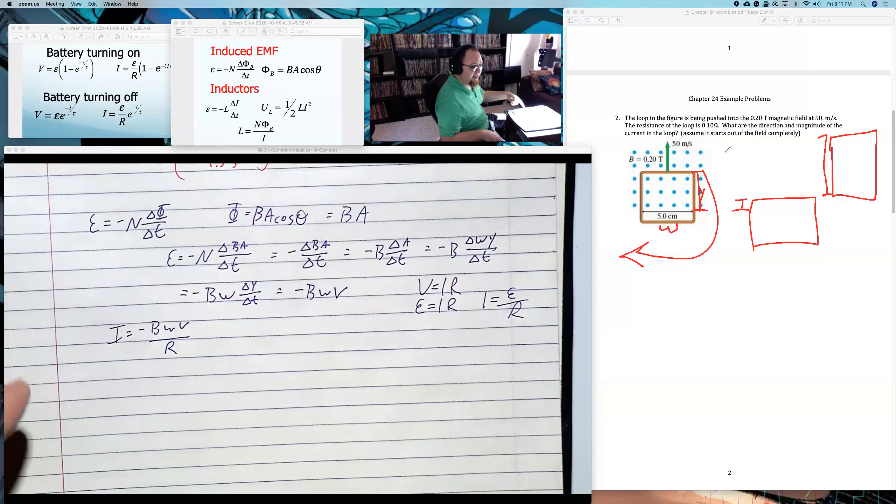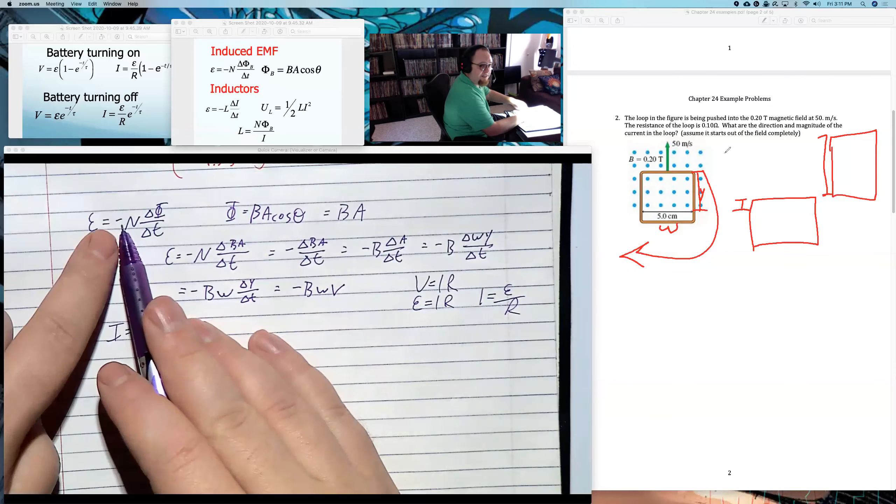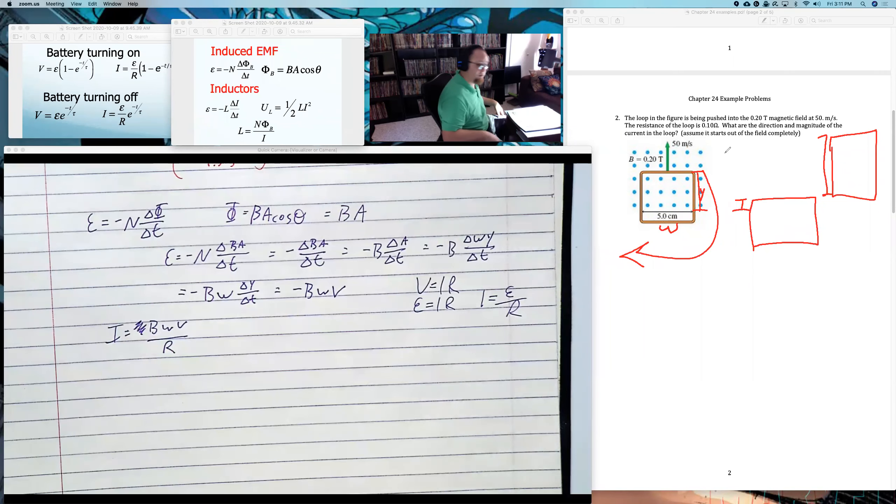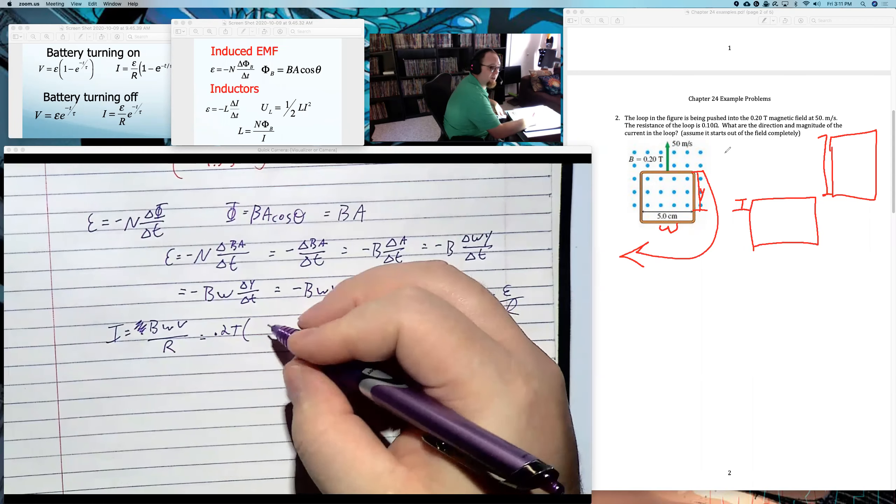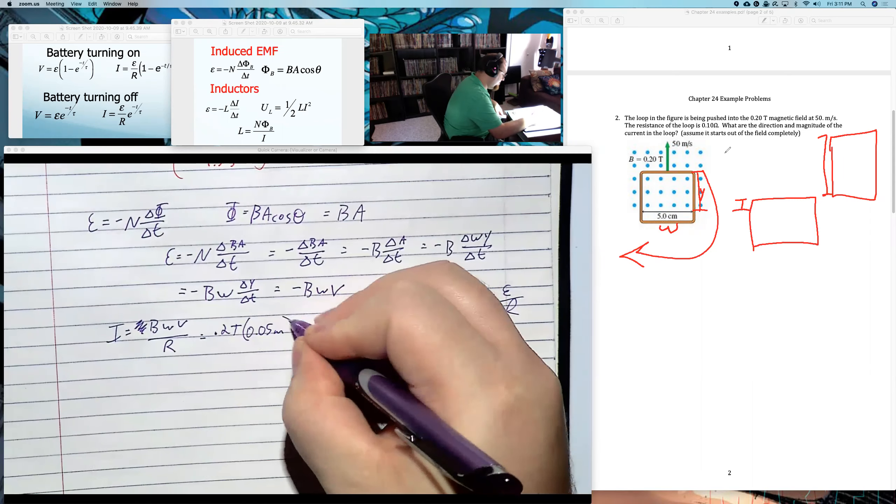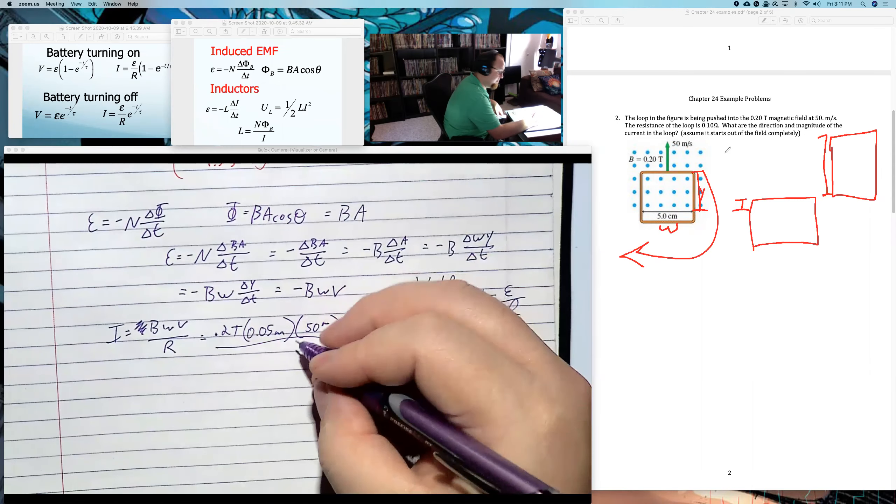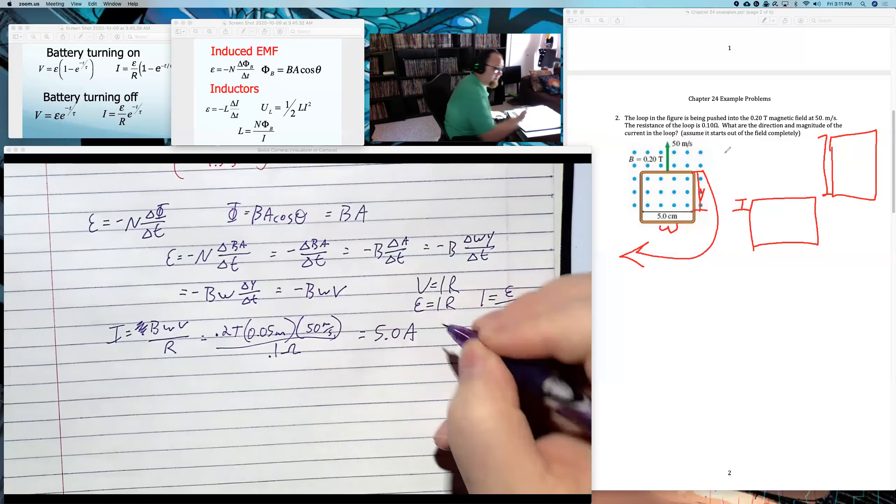And so the current is negative B, W, V over the resistance. Now, this negative sign, what that negative sign says, is that it's the opposite. That's the Lenz's law, right? That, keep in mind, this equation without a negative sign is Faraday's law. This negative sign is Lenz's law. So really, that negative sign just has to show the direction. We're looking for magnitude now. We already worked out direction. So I'm just going to ignore the negative sign, because that's not part of magnitude. And I'll say it's the magnetic field, 0.2 tesla, times the width, 0.05 meters, times the velocity, 50 meters per second, over the resistance. It's a 0.1 ohm resistor, tiny. And it's 5 amps.